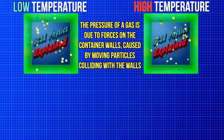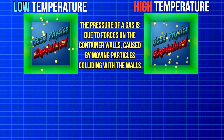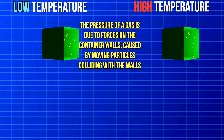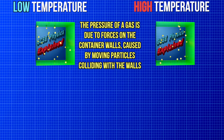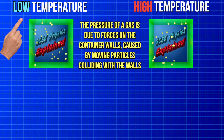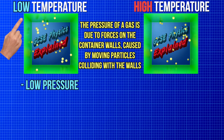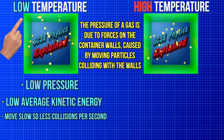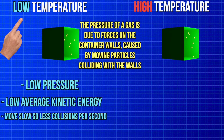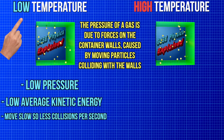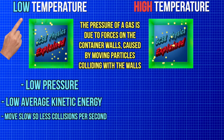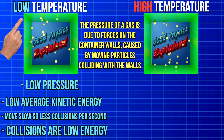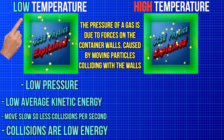Remember, the pressure of a gas is due to forces on the container walls caused by moving particles colliding with the walls. At low temperature, the pressure is low because the particles have a low average kinetic energy, so they move slowly, which causes fewer collisions per second between the particles and the container walls, and each collision is low energy, so it only puts a small force on the wall.